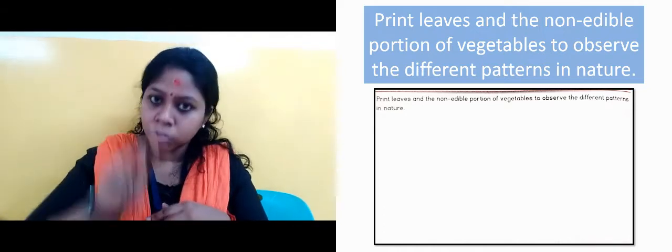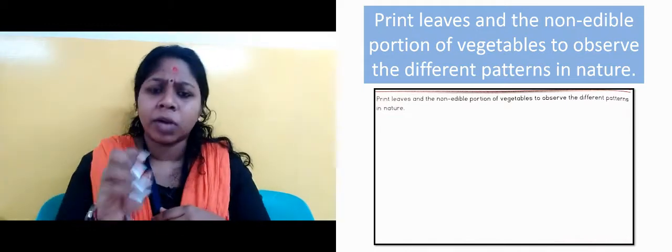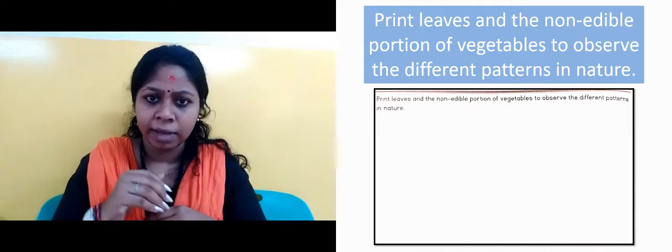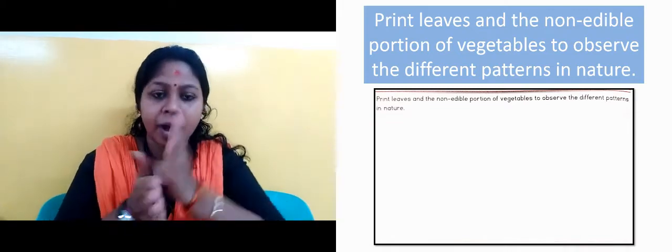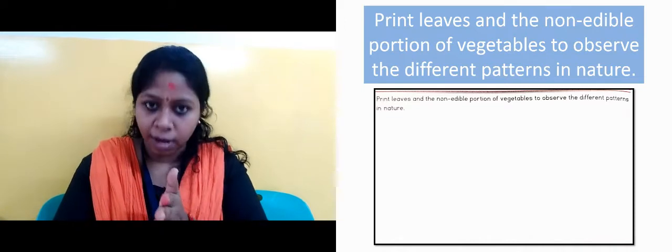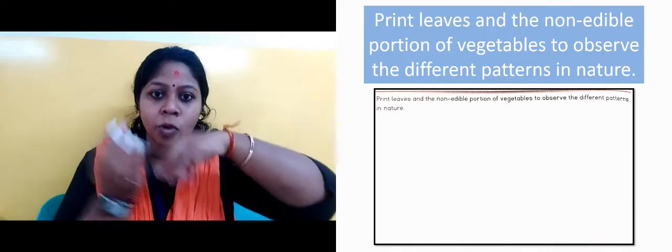And the second one, what you have to do is non-edible portion of vegetables. So for example, you have to cut a piece of onion, cut it in between, the middle part and the upper part, you have to make color and make pattern.